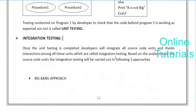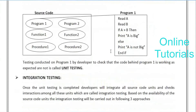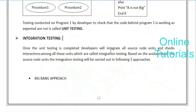Coming to integration testing - these components are combined and converted into an .exe file, and then testing is done on that. Once unit testing is completed, developers integrate all source code units and check the integration among all these units, which is called integration testing. Essentially, they combine all individual units into one .exe file.